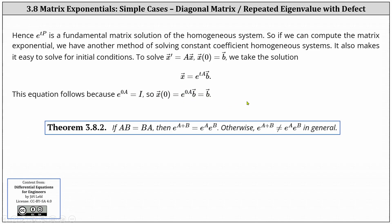Next, we have an important property that we use when determining matrix exponentials. If A and B are matrices, if A times B equals B times A, meaning the matrices commute, then e to the power of A plus B equals e to the power of A times e to the power of B. Otherwise, e to the power of A plus B doesn't equal e to the power of A times e to the power of B in general. This is important when determining matrix exponentials, which we'll see shortly.